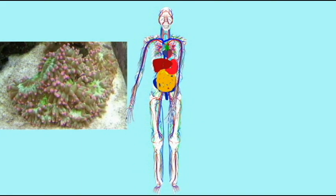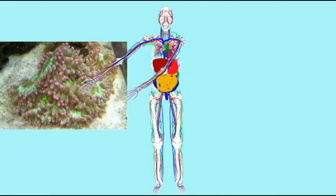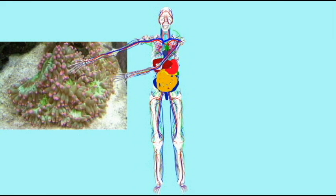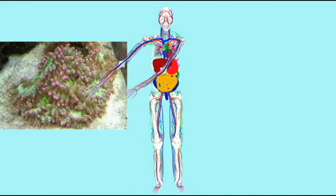While metazoan animals are multicellular, like the simple animals like sponges, metazoan animals possess differentiated cells.